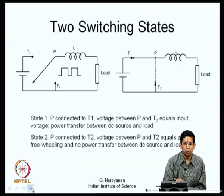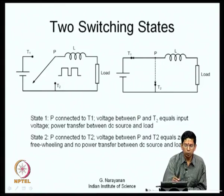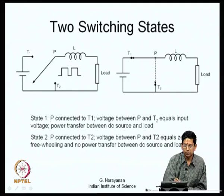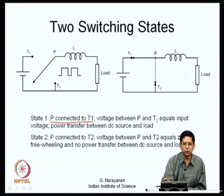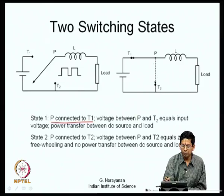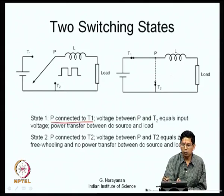To realize the SPDT switch electronically, we analyze the two switching states. In state 1, pole P is connected to throw T1: the switch between P and T1 conducts in the T1-to-P direction, while the switch between P and T2 blocks, with P positive with respect to T2. In state 2, P connects to T2: conduction is from T2 to P, and the switch between P and T1 blocks, with T1 positive with respect to P — the full V_DC appears across P and T1.